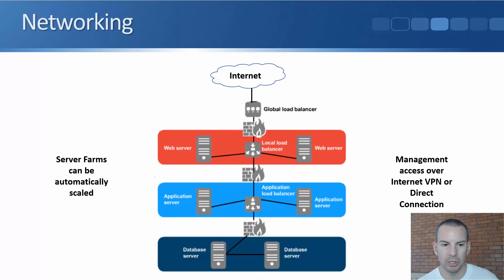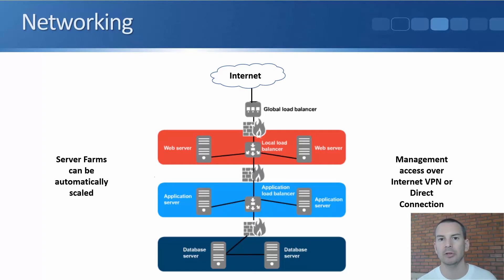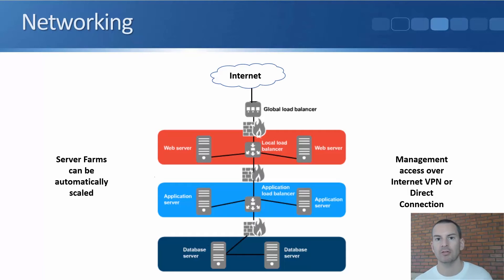The server farms can be automatically scaled. With those web servers and application servers — they're identical and have exactly the same content — I can build an image of those ahead of time, then configure a threshold so that if the load on my existing servers goes above a certain level, I'll automatically spin up an additional server and add it to the server pool. The load balancer will then include it in the connections it distributes. This lets me automatically scale up and scale down the number of servers in line with current demand.